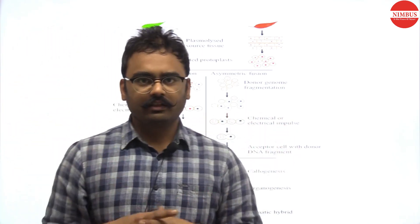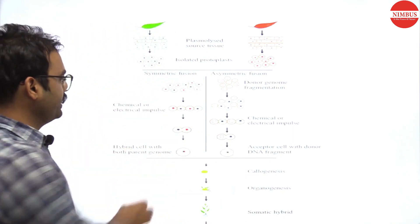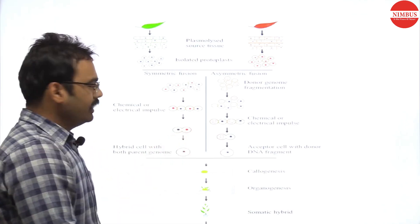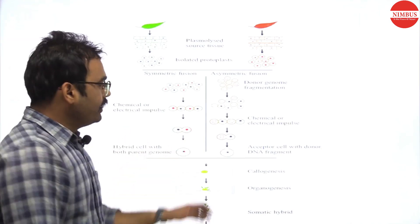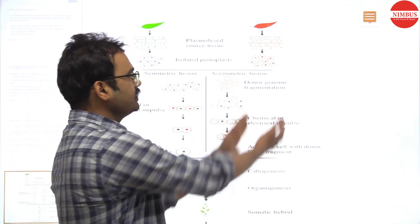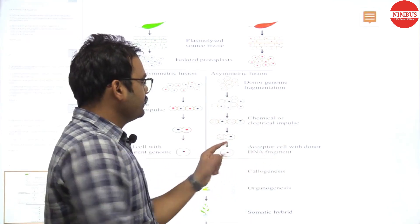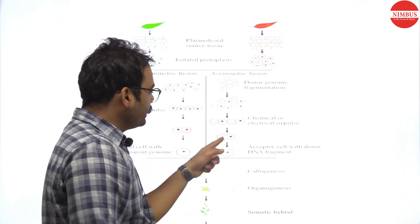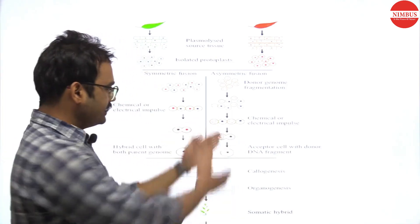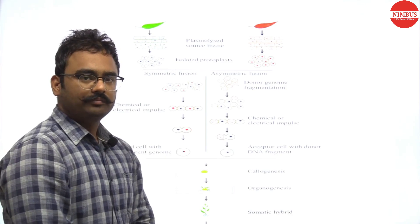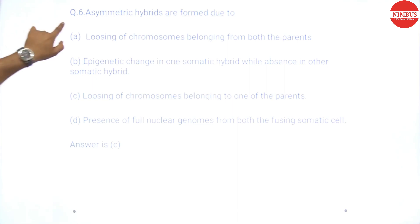In symmetric fusion, both the nuclei and genes from both parent cells are present in the hybrid — so it is called a symmetric hybrid. In asymmetric fusion, one of the parent cells has degraded, so only genes from a single cell remain. This is called an asymmetric hybrid.